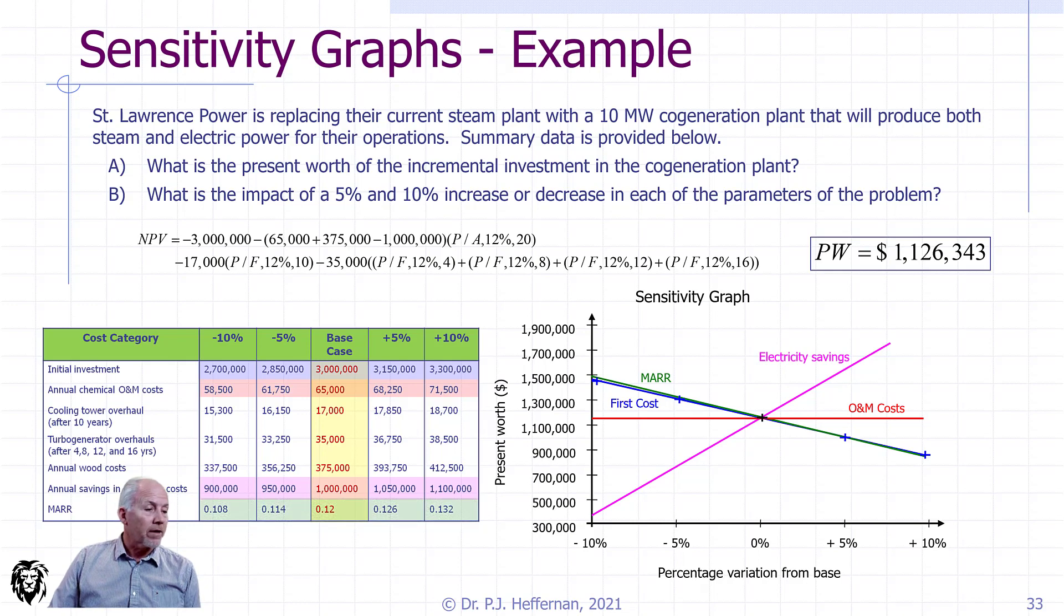Finally, we have an estimate for our minimum annual rate of return is the green line. And it kind of tracks along with first cost with some sensitivity, but not as sensitive as the electricity savings, which would certainly have my concern.